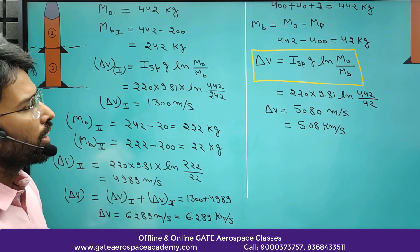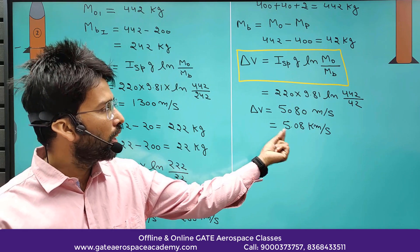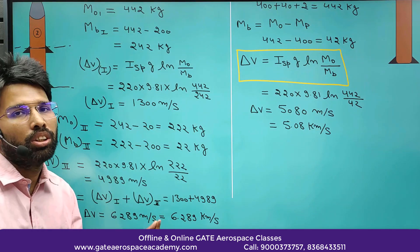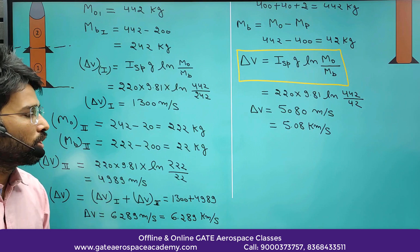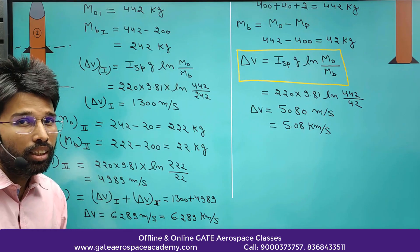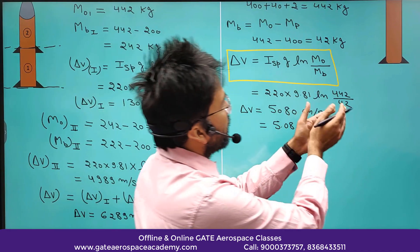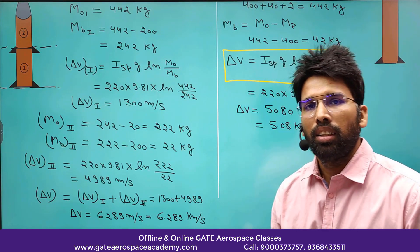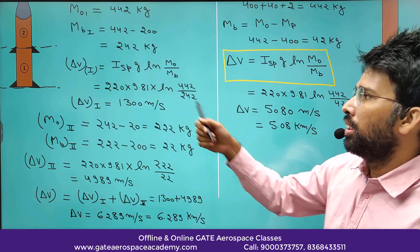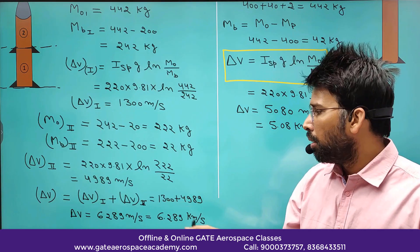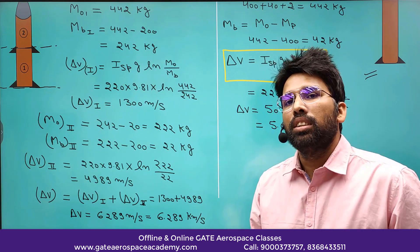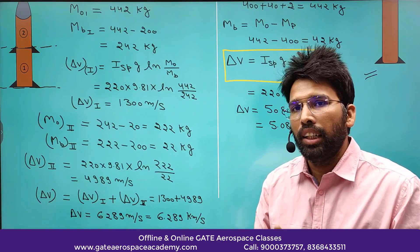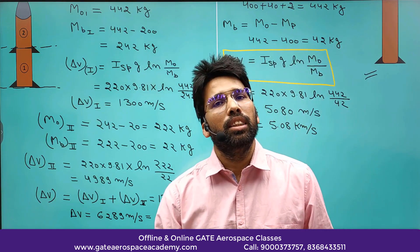In the single stage rocket case, we achieved 5.08 km per second delta V. Here with the double stage rocket, we got 6.289 km per second — an additional 1.2 km per second velocity by converting the single stage rocket into a double stage. So this is the advantage of multi-staging. The double stage rocket is more beneficial because our ultimate aim is to get delta V as high as possible. This is the advantage of multi-staging in rockets.